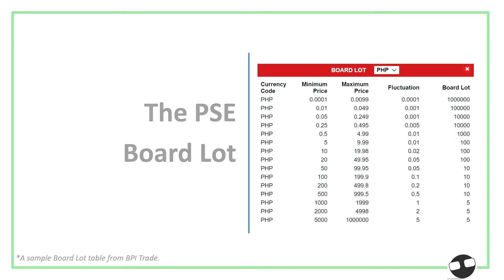Here we have the standard board lot of the PSE. This one is coming from BPI Trade, but it's actually constant across all brokers. You have the column for currency, you have the minimum price, you have the maximum price, fluctuation, and board lot.